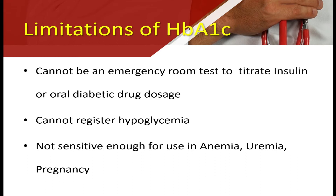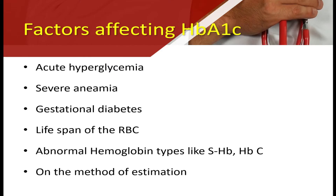The limitations of HbA1c: it cannot be used in an emergency room to titrate oral hypoglycemic drugs or insulin. HbA1c cannot be used to detect hypoglycemia. It is not sensitive in patients with anemia, uremia, and pregnancy. Factors affecting HbA1c levels include acute hyperglycemia, severe anemia, gestational diabetes, lifespan of RBC, abnormal hemoglobin types, and method of estimation.